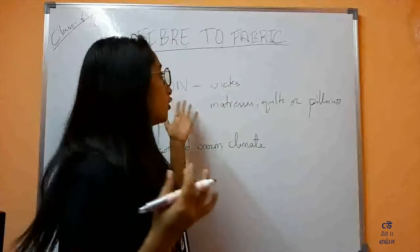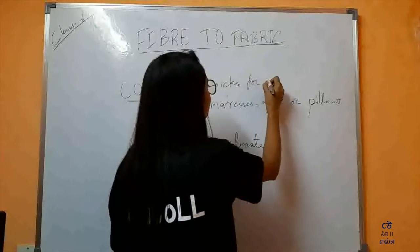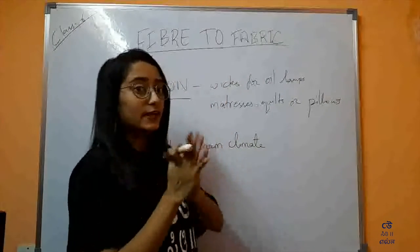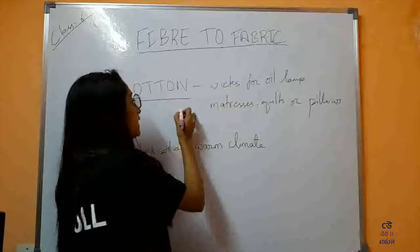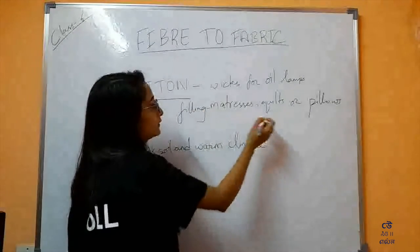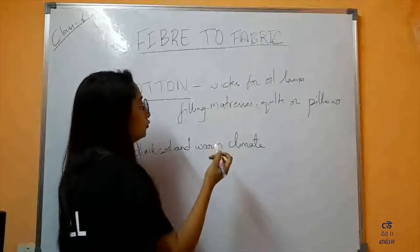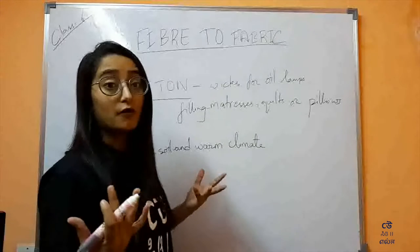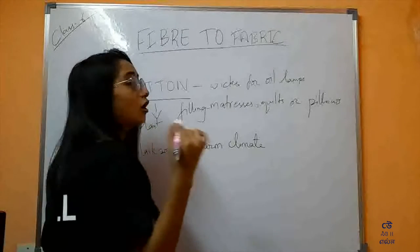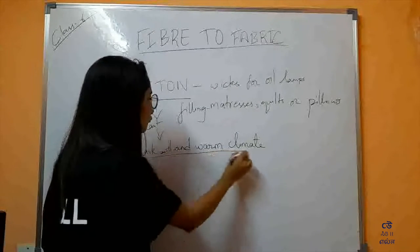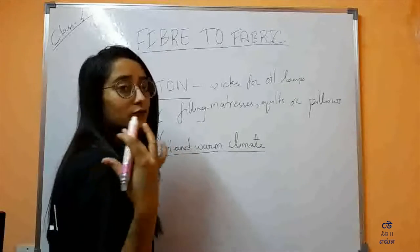Now let us study about cotton. Have you ever made the wicks for oil lamps? Cotton is used in various purposes like for filling mattresses, quilts, or pillows, and even for oil lamp wicks. Have you ever wondered where cotton comes from? Cotton actually comes from the cotton plant. It is usually grown in black soil and a warm climate — only that favors the growth of cotton plants.